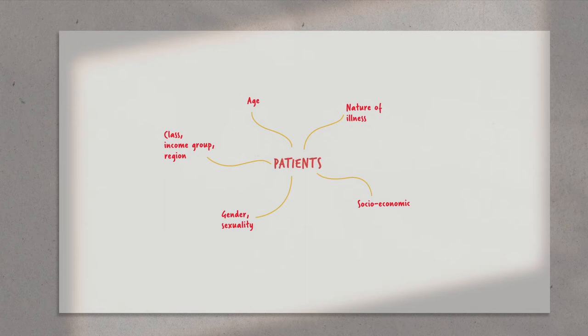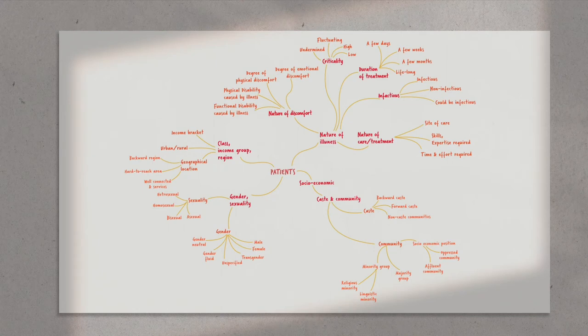For example, patients would be a broad participant group in our healthcare study, but patients would be of different ages, genders, socioeconomic backgrounds, and suffering from different illnesses. We can break down this large participant group based on some of these variables. This can help us understand how different variables such as the nature of the illness or gender affect their experience of sickness and healthcare. We could also consider variations in spaces and activities across time.